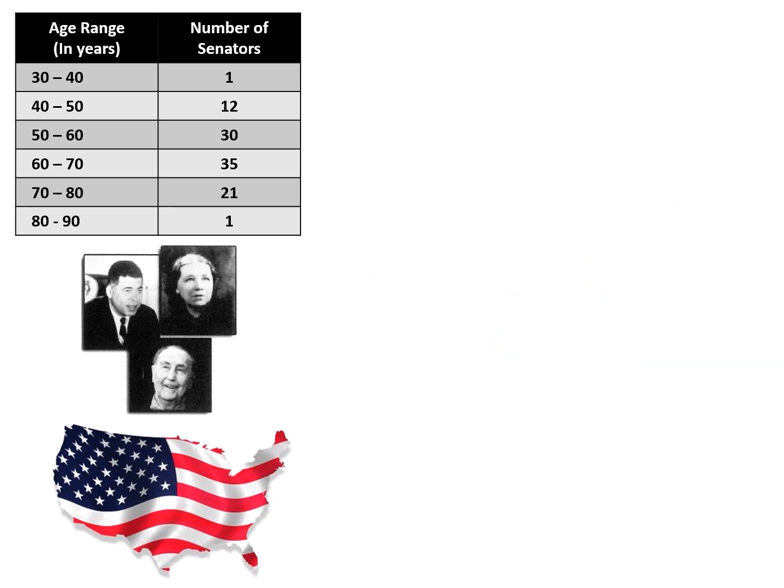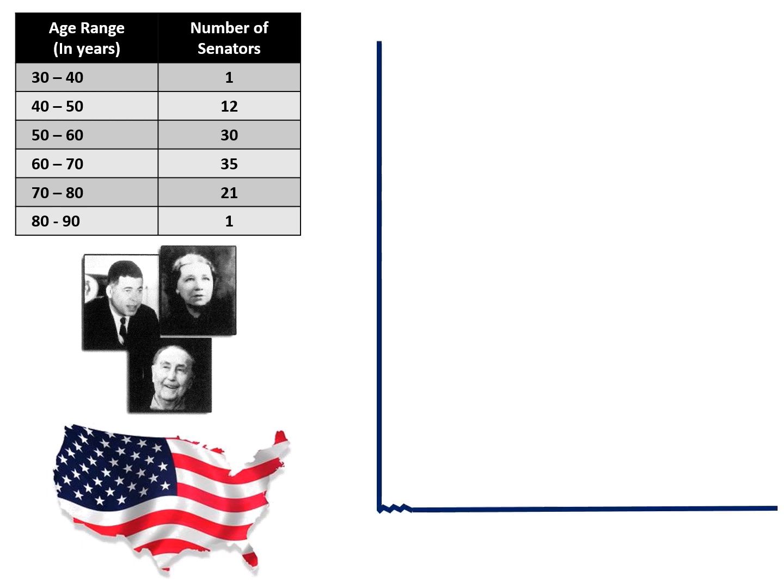The first thing we're going to do is draw the Y and X axes. For the X axis, I started with a squiggly line — this is a broken number line — because our ages are going to start at 30 and not zero. This is why we have a broken number line for the X axis. Every graph has to have a title; our title is U.S. Senator Ages.